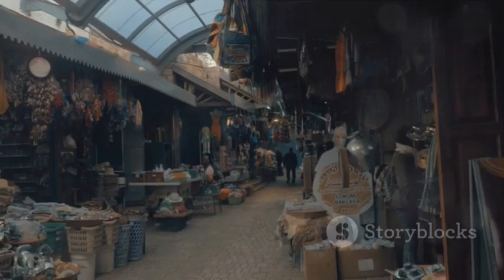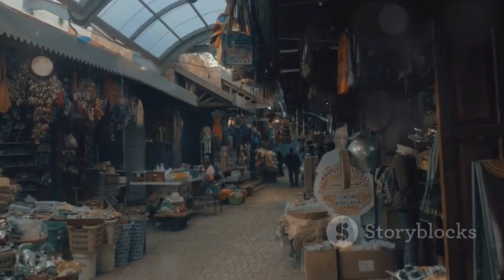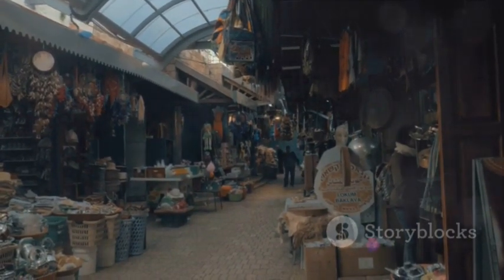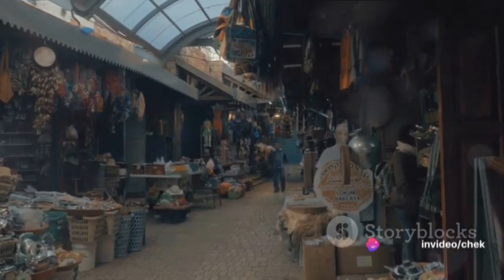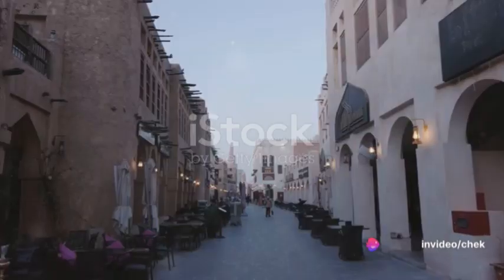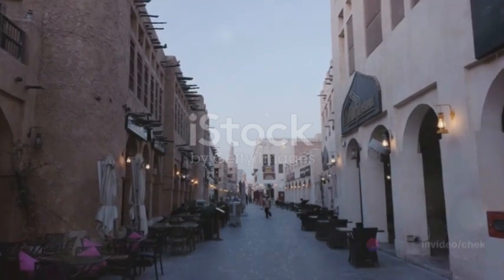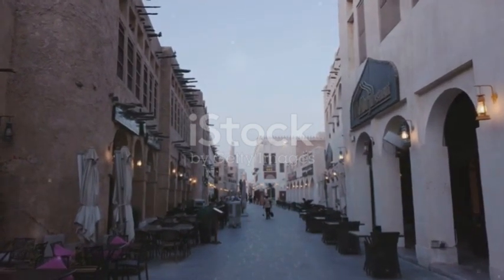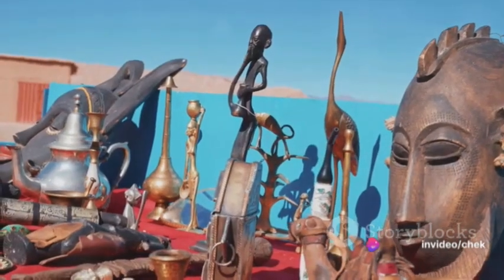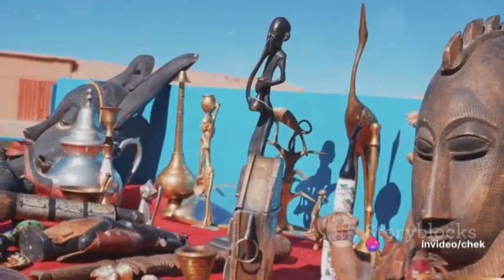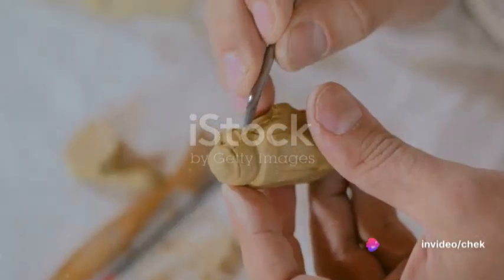Tarik observed an intriguing pattern: some items held more value than others, and their worth fluctuated with demand and scarcity. He saw how a bushel of wheat could be worth a jug of wine one day and two the next. Tarik realized that this fluidity of value made trade unpredictable and inefficient. An idea began to take shape in Tarik's mind — a concept so revolutionary that it would change the face of trade forever.